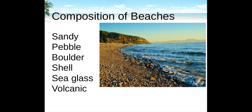Pebble beaches are found on virtually every beach on Earth. However, there are a few beaches entirely composed of pebbles, known as pebble beaches. The pebbles vary in size ranging from 0.1 to 7.9 inches in diameter, with larger pebbles generally found nearer to the shore. Pebble beaches are formed after pebbles are carried by ocean currents and deposited on the shore by high energy waves.